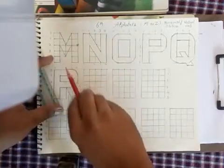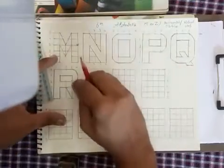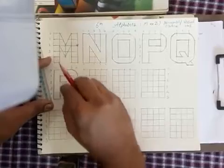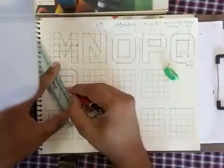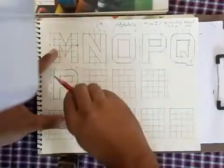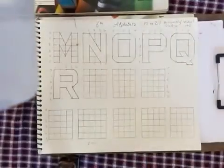I hope you understood. So when you erase extra line, that will look like P. R. That will look like R. After that, erase this line also. R is ready.